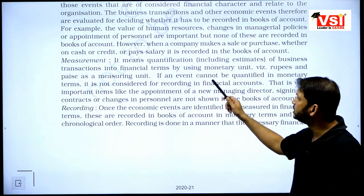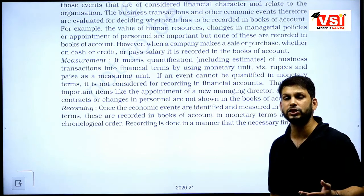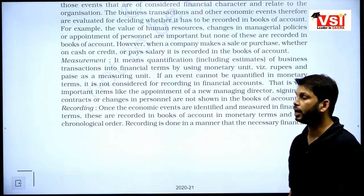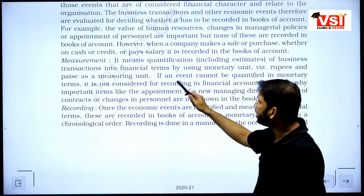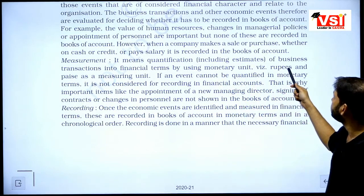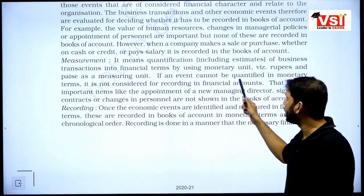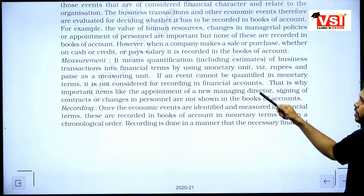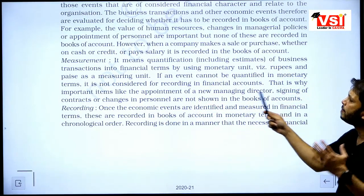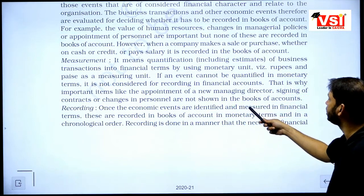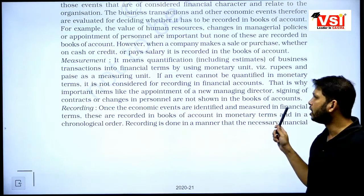Measurement is the second element — it means quantification. Qualitative things we cannot record or measure, but quantitative things we can put a number to. This includes expressing business transactions in financial terms using monetary units like rupees and paise. If an event cannot be quantified into monetary terms, it is not considered for recording. That is why important items like appointment of a new managing director, signing of contracts, or changes in personnel are not shown in the books of accounts.